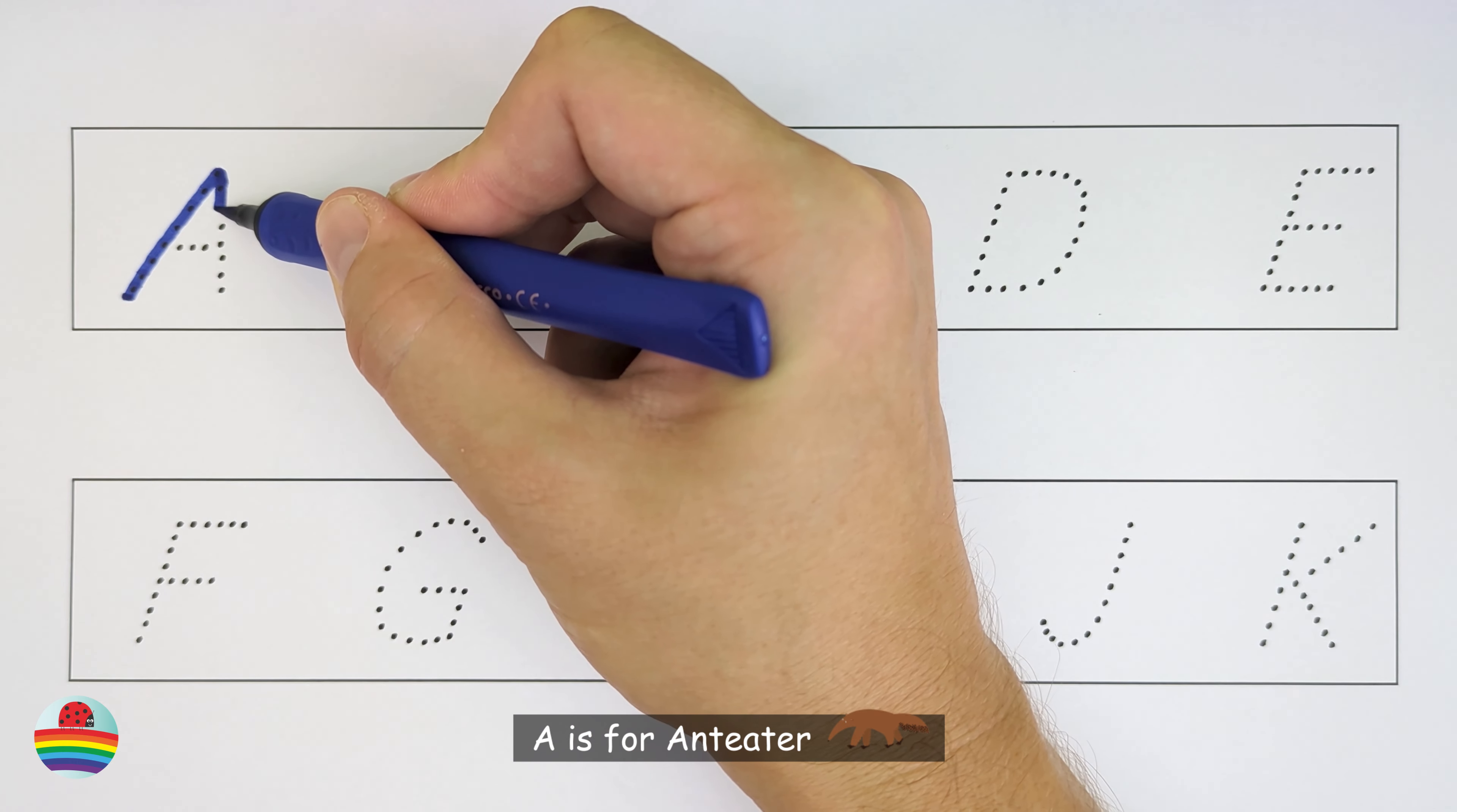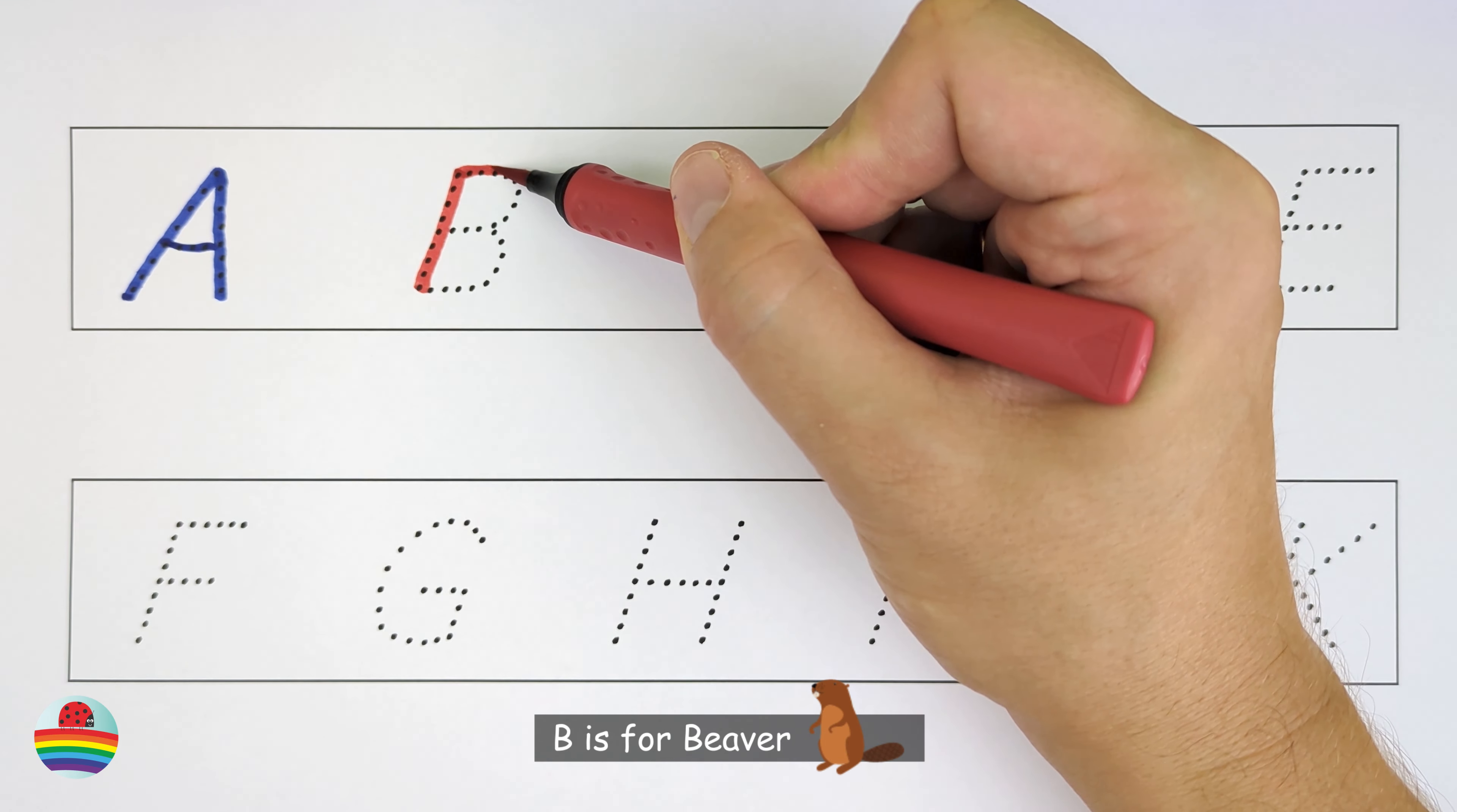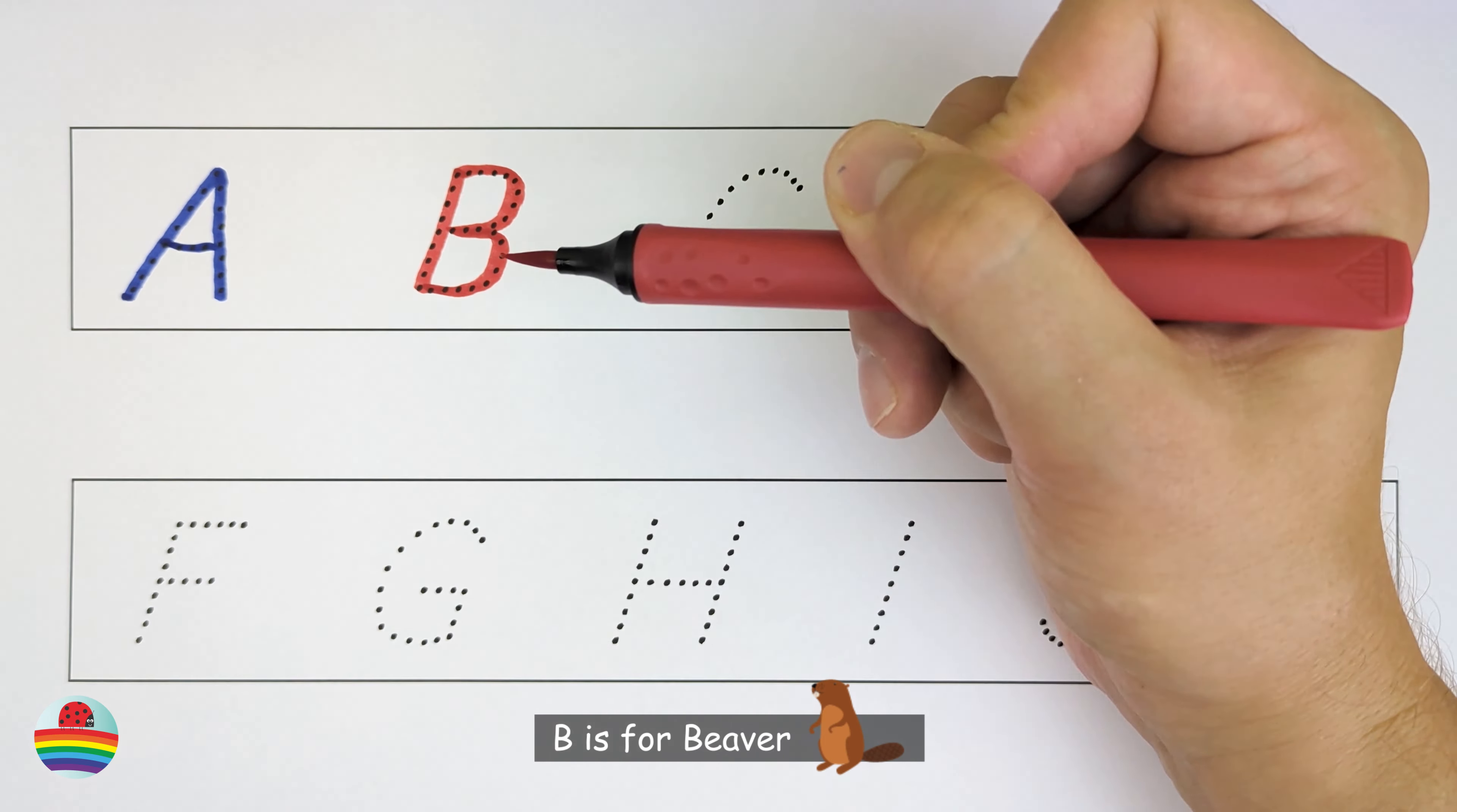A. A is for Anteater. A. B. B is for Beaver. B.